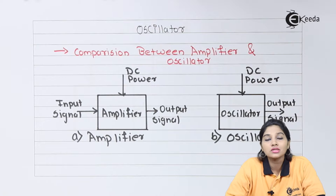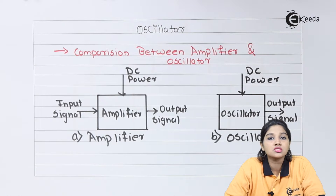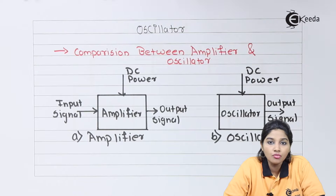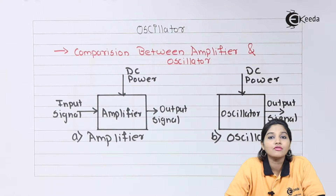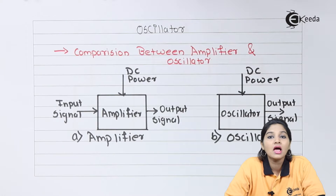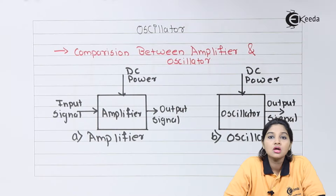An oscillator is basically an electronic circuit which can provide oscillations at the output — that means different signals at the output having some specific frequency and some specific amplitude.